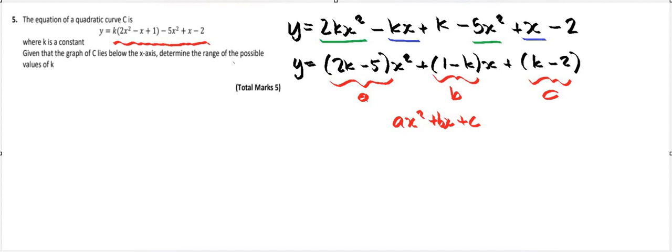Right, now this tells us that the graph lies below the x-axis. Determine the range of the possible values of k. Well, if it doesn't cross the axis, there are no solutions, so we take the discriminant. We know b squared minus 4ac must be less than 0.